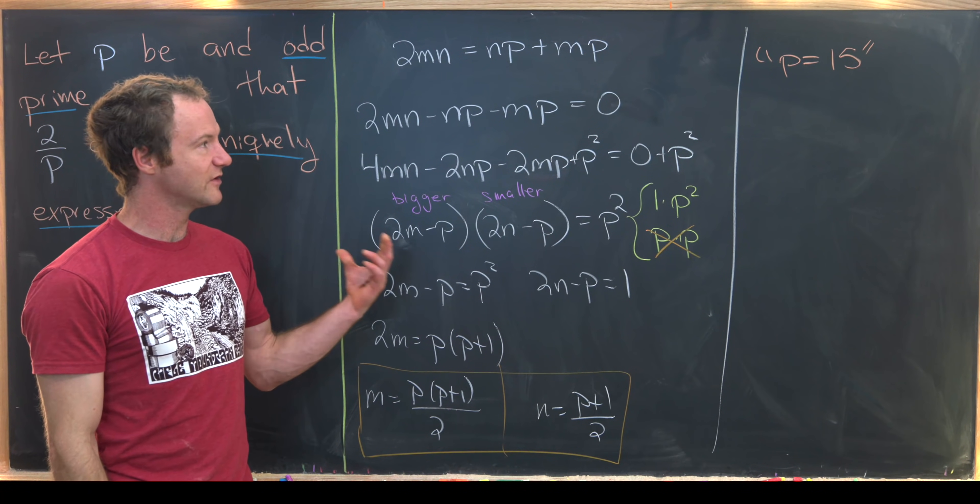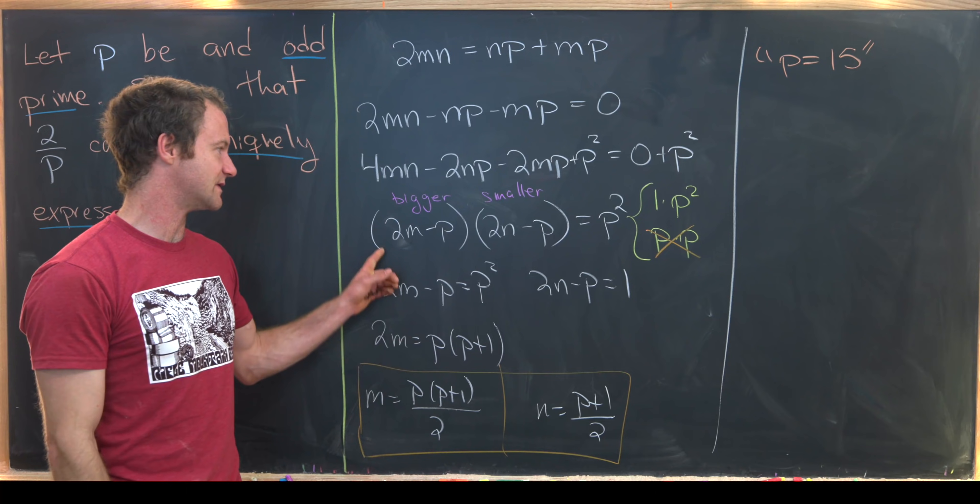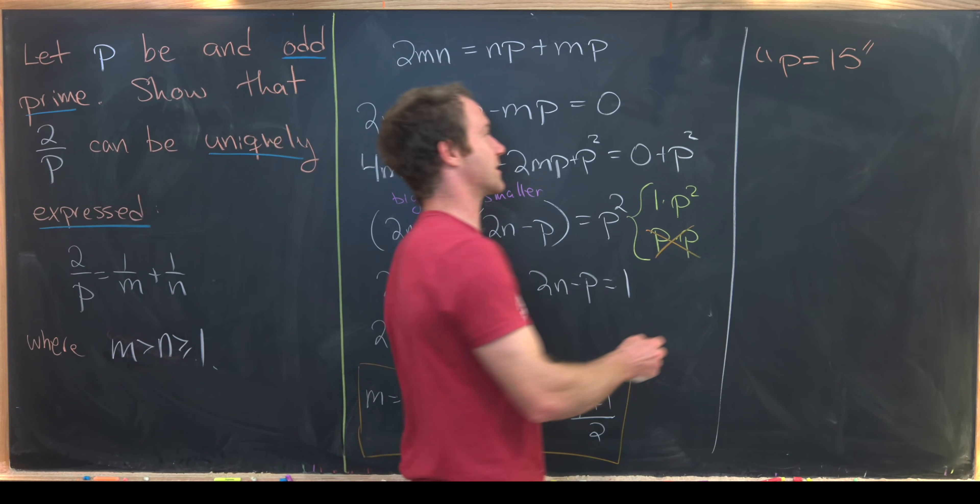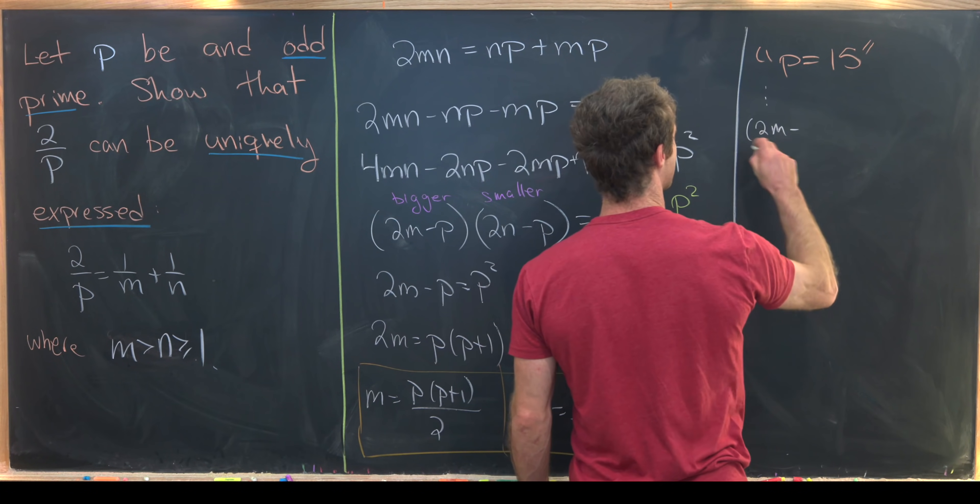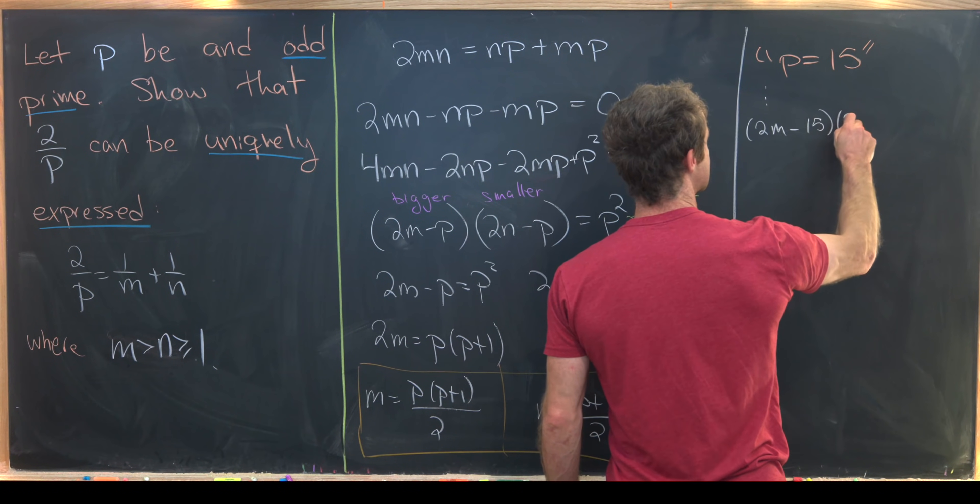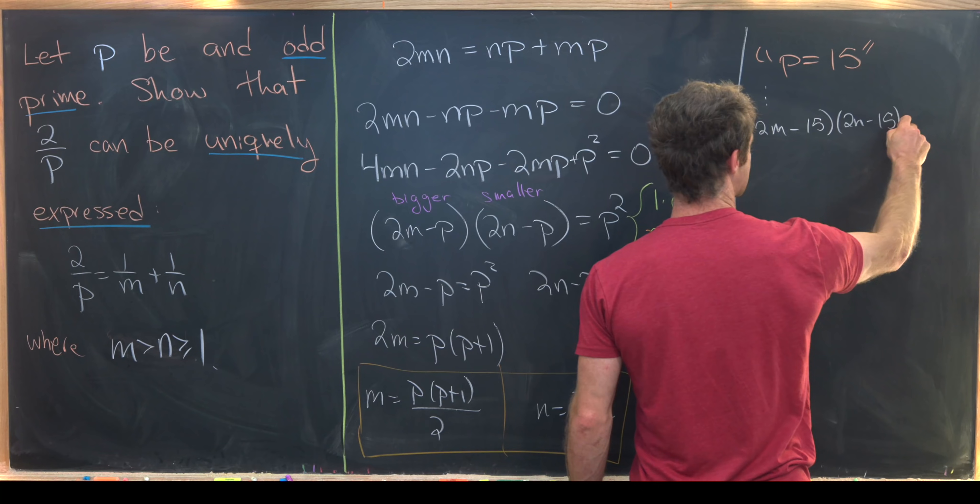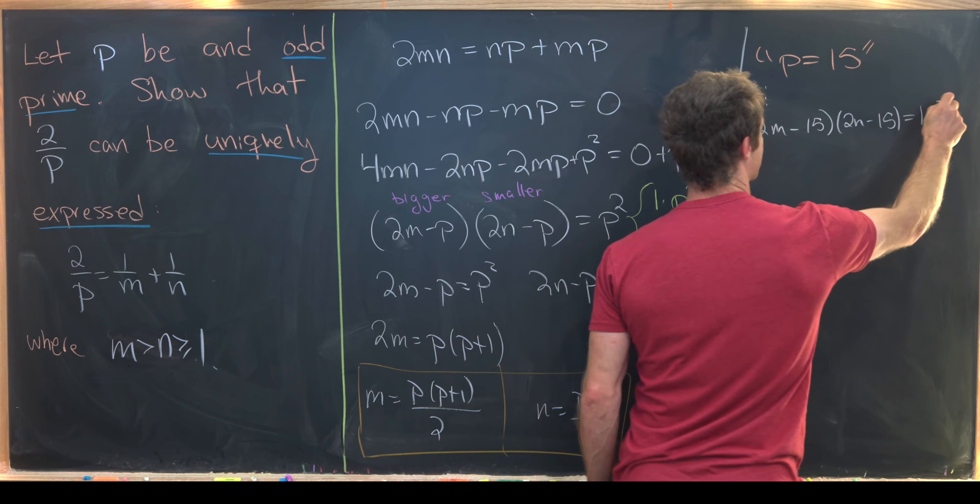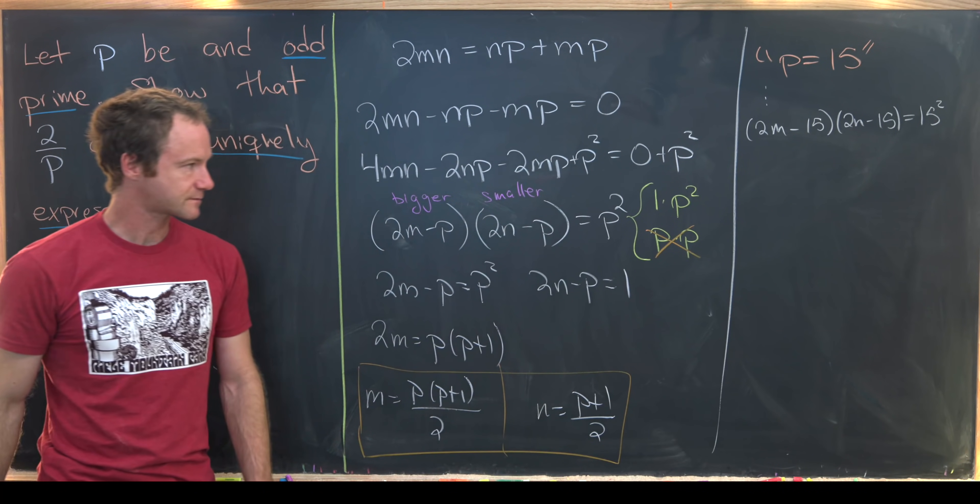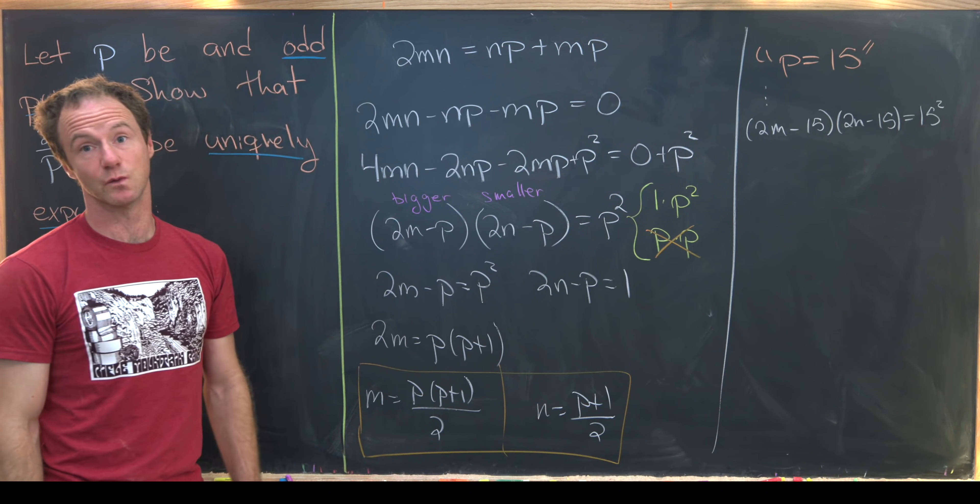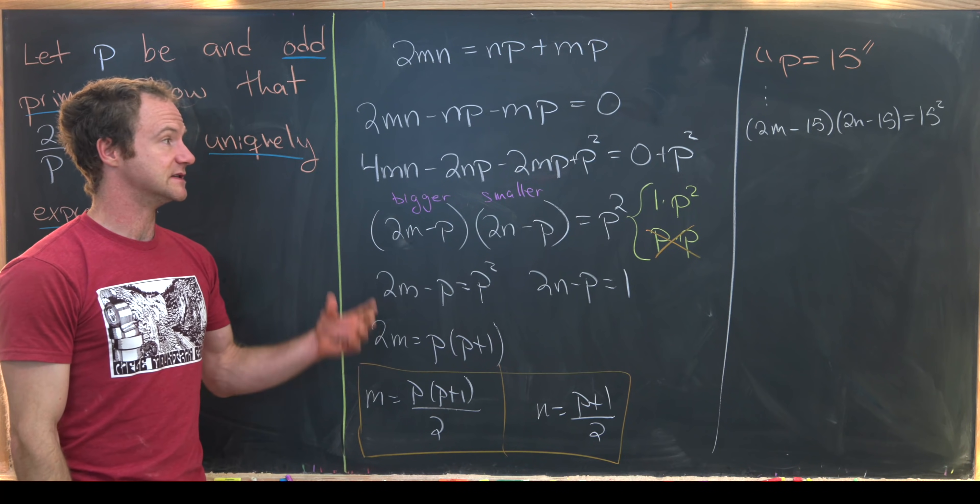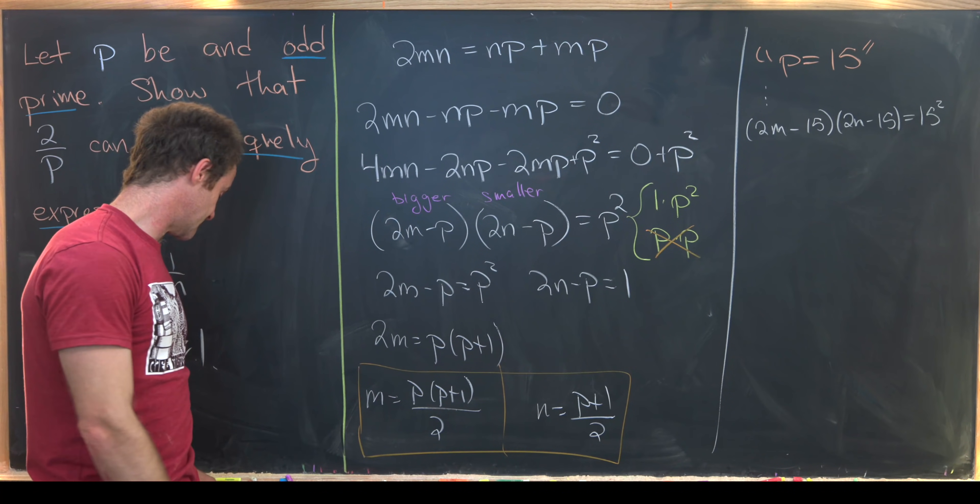Okay well everything's going to go pretty much the same until we get to this stage right here. So I'll just put dot dot dot. We get (2M - 15) times (2N - 15) is equal to 15 squared. But now 15 squared has lots more factorizations than 1 times 15 squared and 15 times 15.